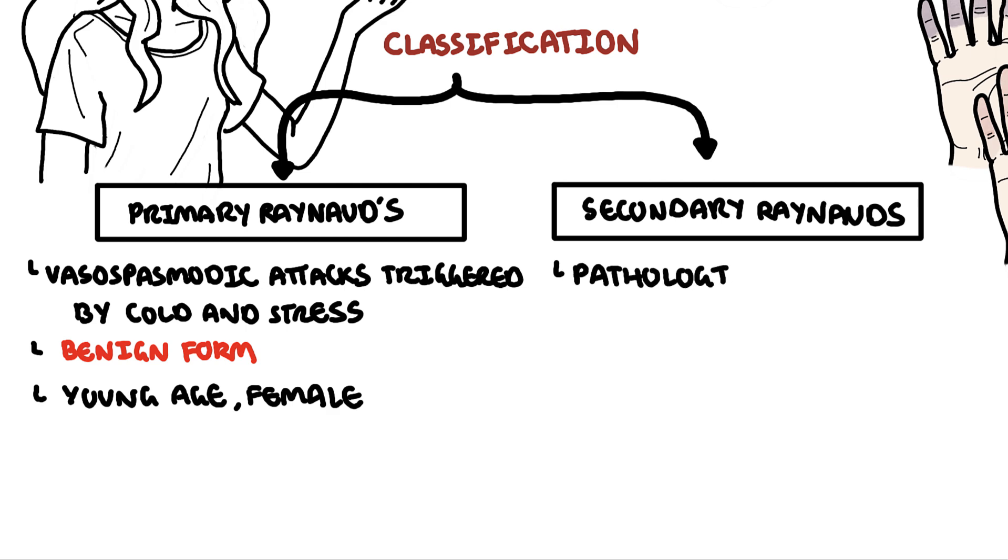Secondary Raynaud's phenomenon, also known as Raynaud's syndrome, is typically pathological and is associated with underlying diseases, most commonly autoimmune or connective tissue disease, such as systemic lupus erythematosus or systemic sclerosis.